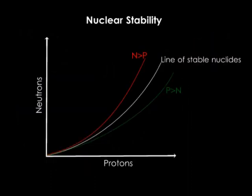This graph shows the number of neutrons, N, against the number of protons for stable and unstable nuclides. From the graph, it is observed that the unstable nuclides are outside the stability line. Those nuclides above the stability line have too many neutrons, hence decay in such a way that the proton number increases. Those below the stability line have too many protons and therefore decay in such a way that their proton number decreases. In either case, radiations are emitted.